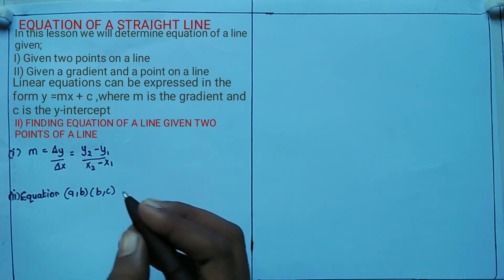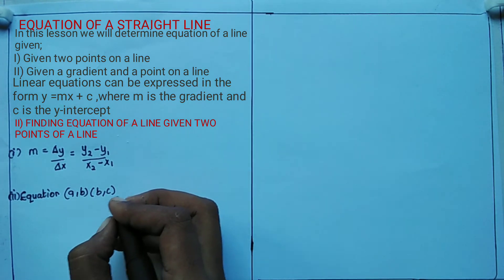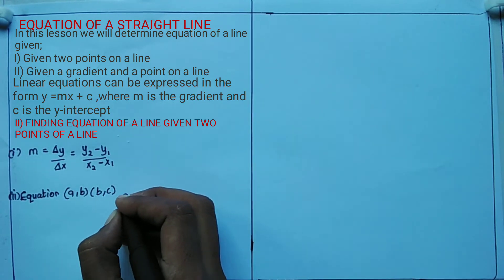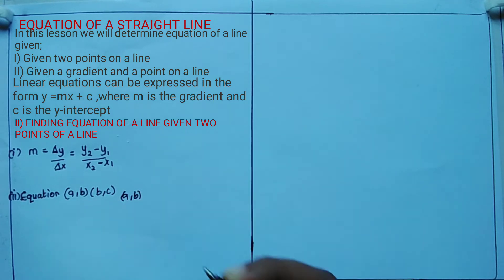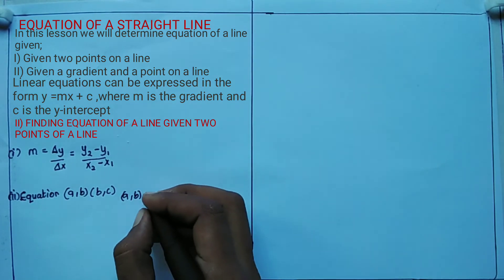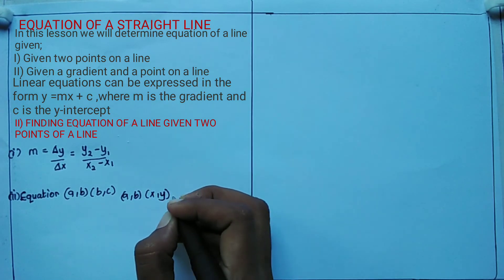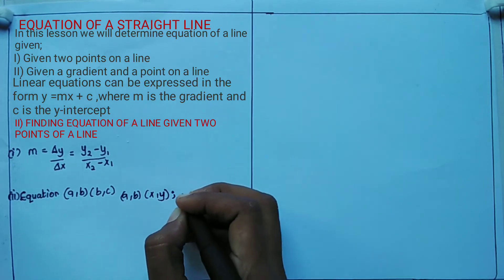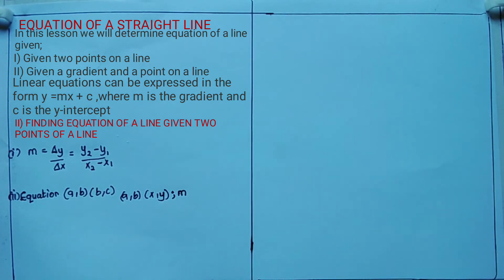Let's say you pick coordinates (a, b), and you also pick any other random point (x, y). Then you apply the gradient formula using those two points.